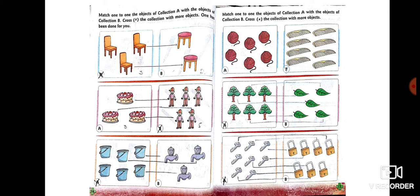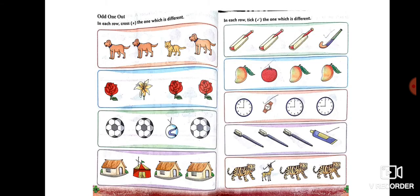For example, on page 16 the first one: collection A has three objects whereas collection B has two objects, so we will cross out collection A. Why? Because it has more objects than collection B. Now we will learn about the odd one out. Odd means different from all.